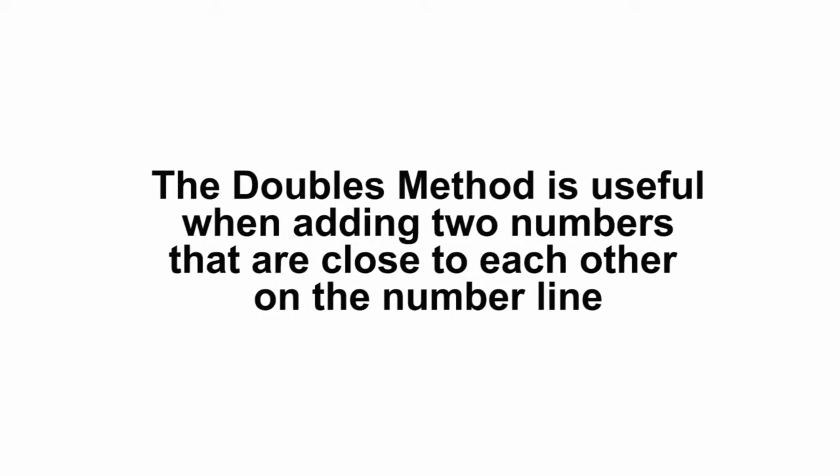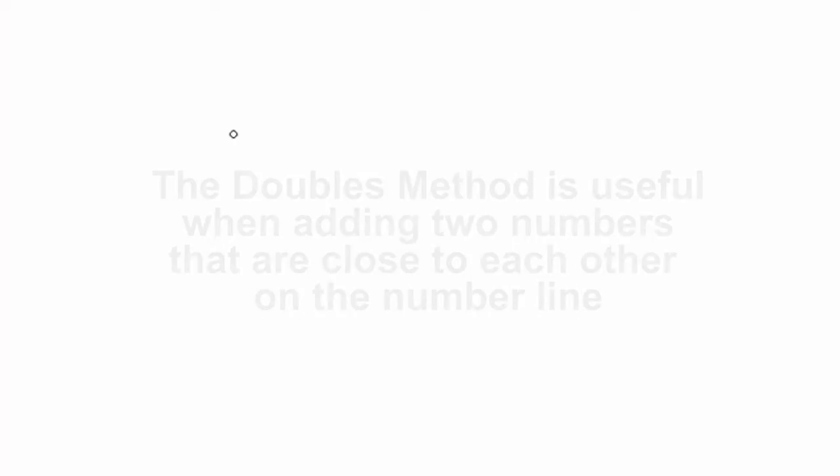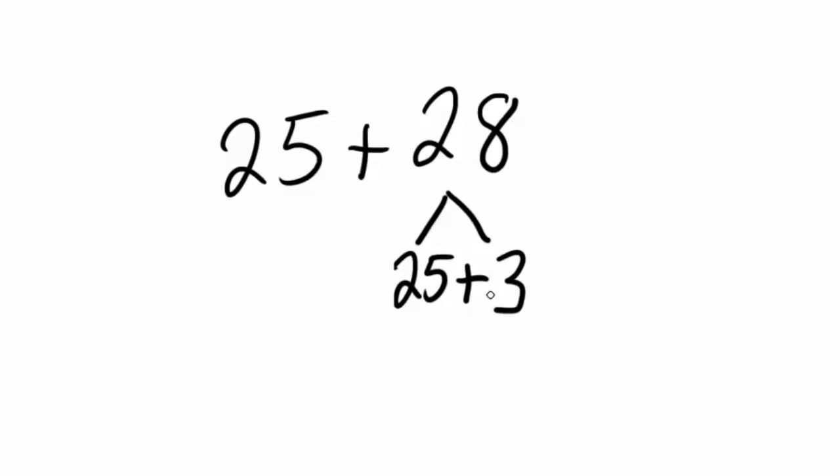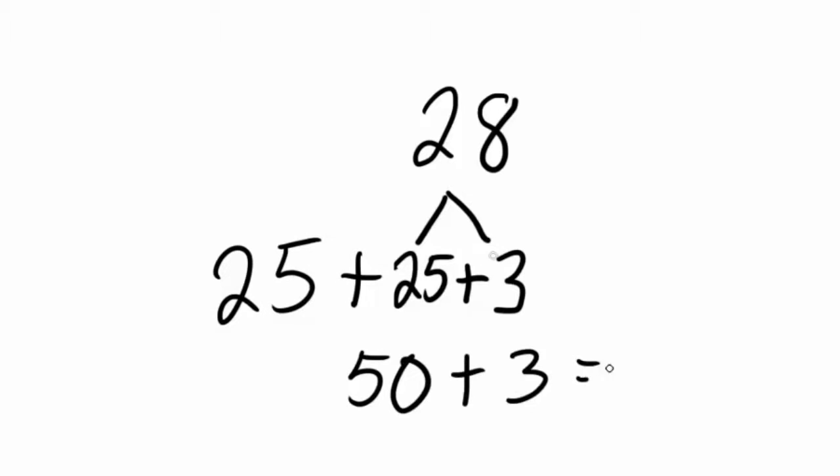Making doubles is useful when adding two numbers that are close to each other on the number line. For example, 25 plus 28. I can double 25 plus 25 to get 50, then add the remaining 3 to get 53.